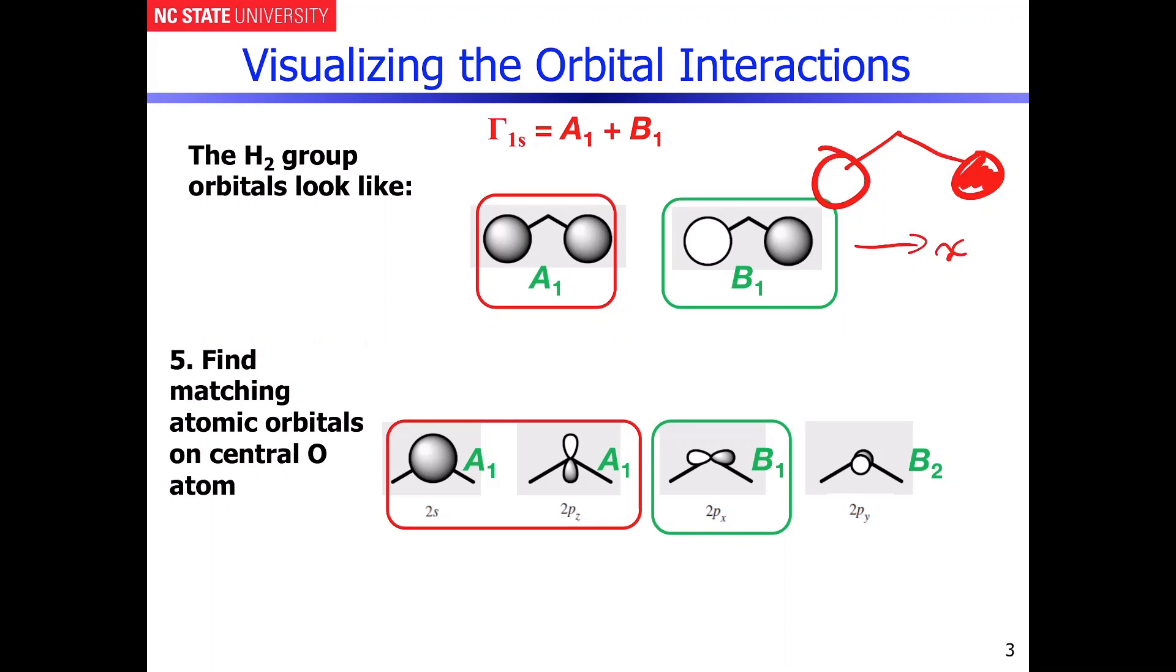And then if I superimpose on this the in-phase combination from the Px atomic orbital on oxygen, you can very clearly see that there's a very strong bonding interaction that's occurring between the oxygen and the hydrogen atoms on each side of the oxygen.